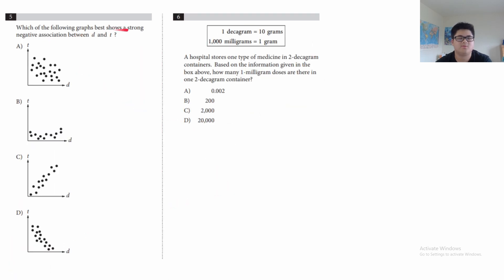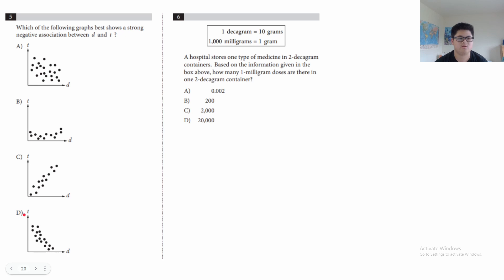Question 5: which of the following graphs best shows a strong negative association between D and T? A negative association means as one variable goes up the other goes down — so a negative slope. This rules out B and C. Between A and D: answer A shows a correlation but it's not very strong, while answer D shows a much stronger correlation where D is a much better predictor of T. The answer is D.